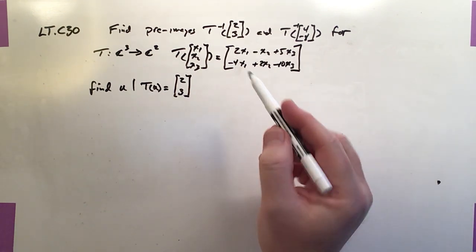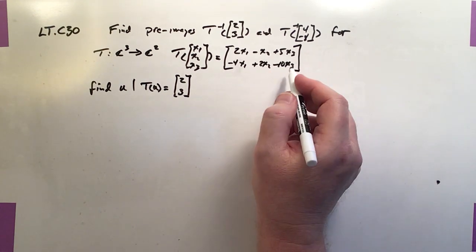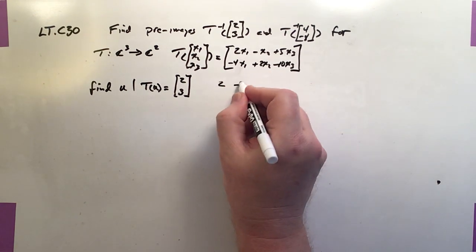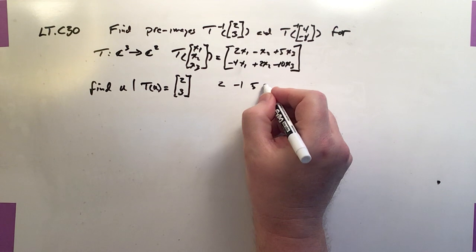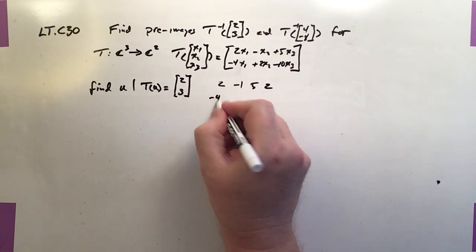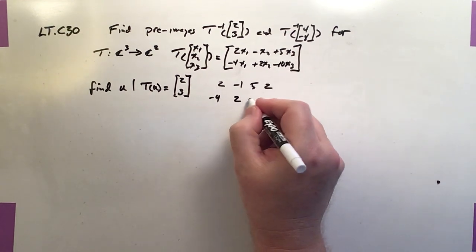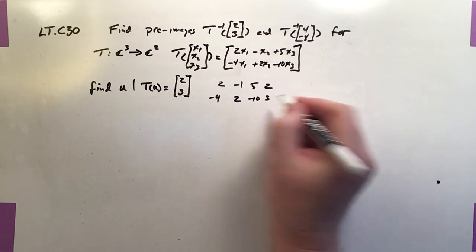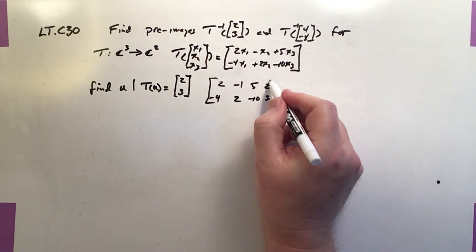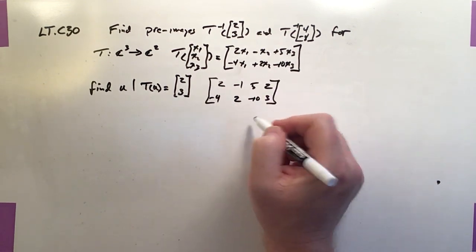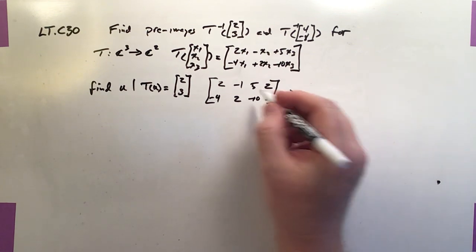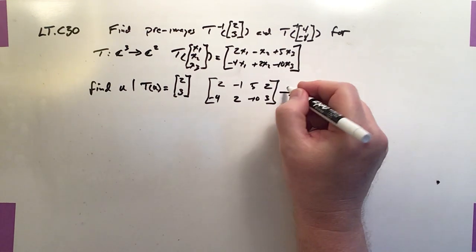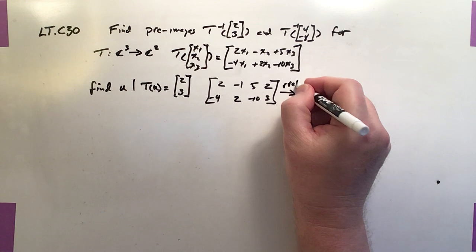The first step is to build the matrix. So I'm going to build an augmented matrix, which is [2, -1, 5, 2] and [-4, 2, -10, 3]. Of course, to do this with technology, I'm going to have to build a third and fourth row because tech doesn't like to do row echelon form of non-square matrices. But I'm going to take the REF of this guy.